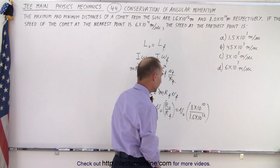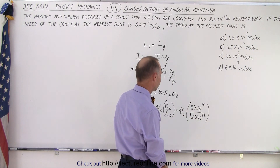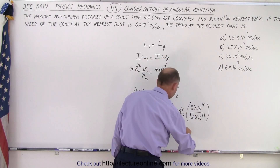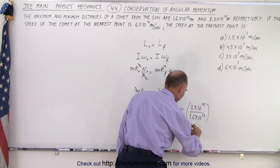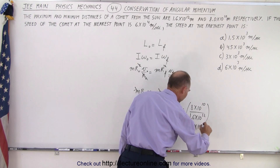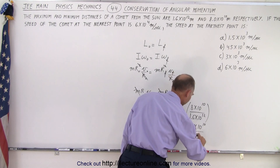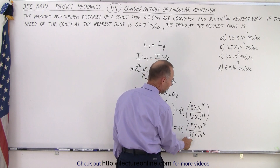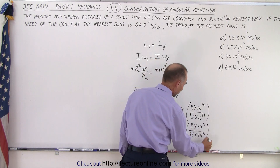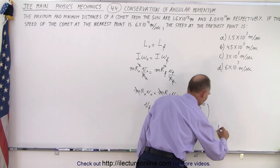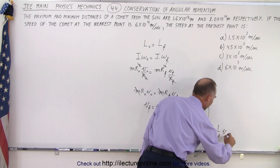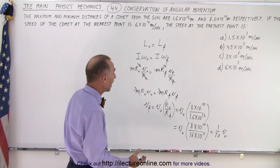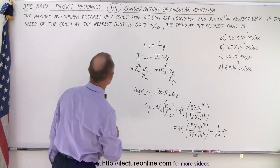Let's work that out. Writing 1.6 times 10 to the 12th as 16 times 10 to the 11th: 8 divided by 16 is one half, and dividing by 10 gives one twentieth. So V_final equals one twentieth of the initial velocity. All we have to do is take the initial velocity and divide by 20 to get the final velocity.